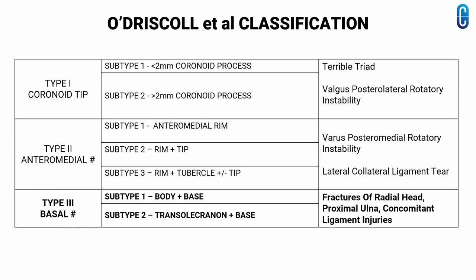Type 3 affects the basal part of the coronoid, which will be a large piece. It is subdivided into 2: subtype 1 is fracture involving the body and base, and subtype 2 is fracture involving trans-olecranon and basal coronoid. This type is usually associated with fractures of the radial head, proximal ulna, and ligamentous injuries.